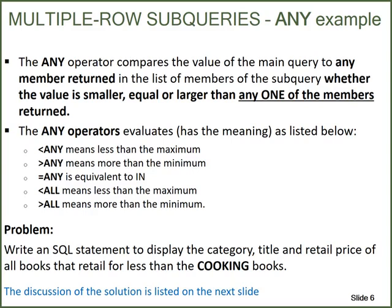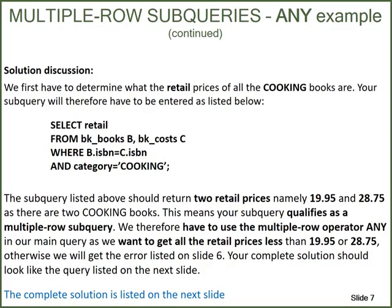The problem we want to solve is to write an SQL statement to display the category, title, and retail price of all the books that retail for less than the cooking books. So we must first find out what the retail prices are for the cooking books, and then list all books whose retail price is less than the retail price of the cooking books. Your subquery will be: SELECT retail FROM BK_Books B, BK_Costs C WHERE B.ISBN equals C.ISBN AND category equals 'Cooking'. This subquery should return two retail prices, namely $19.95 and $28.75, as there are two cooking books.